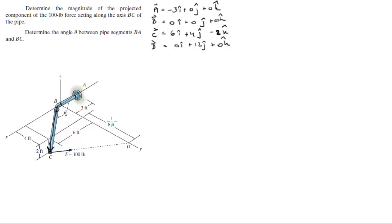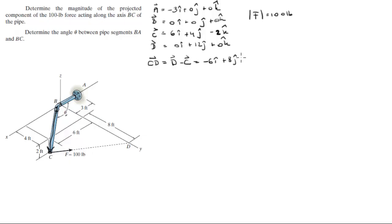The first thing we're going to do is find the components of the Cartesian form of the force. You also know that the magnitude of the force is 100 pounds. To find the Cartesian form, we're going to find vector CD by subtracting position vector C from D, and this gives you negative 6i plus 8j plus 2k. The next thing you need to do is calculate the magnitude of this vector by doing the x component squared plus y component squared plus z component squared. You plug in these three values and you get that the magnitude is 10.2.